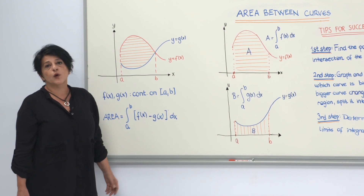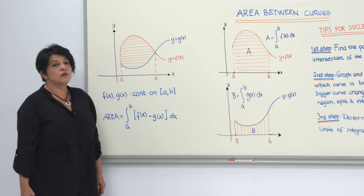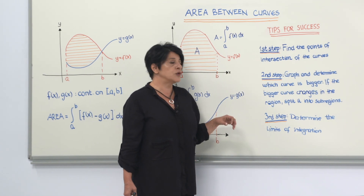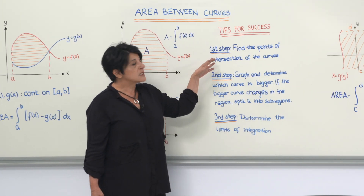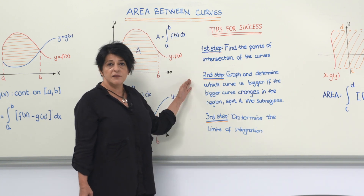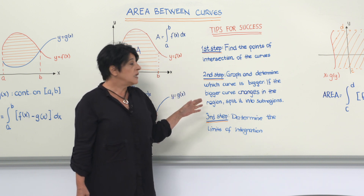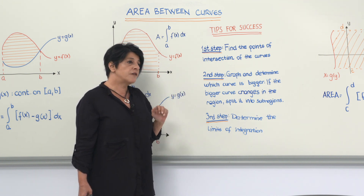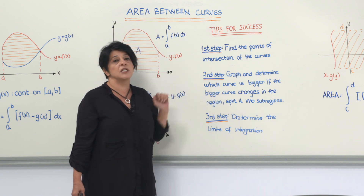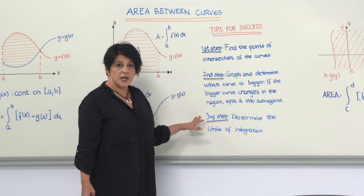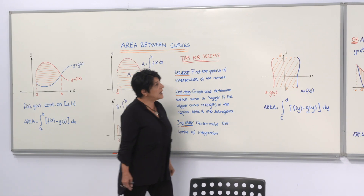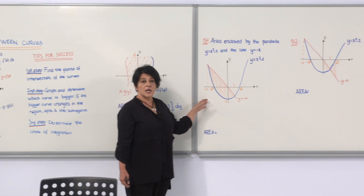Now before we solve some questions, I want to give you some tips for success. When calculating the area between two curves, the first step is to find the points of intersection of the curves, if any. The second step is to graph and determine which curve is bigger — if the bigger curve changes in your region, you need to split the region into sub-regions. The third step is to determine the limits of integration.